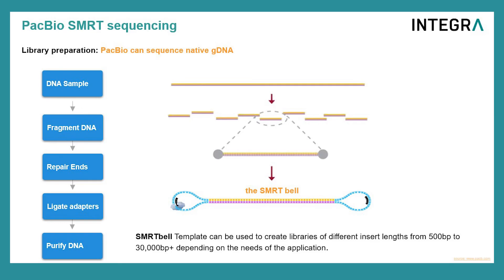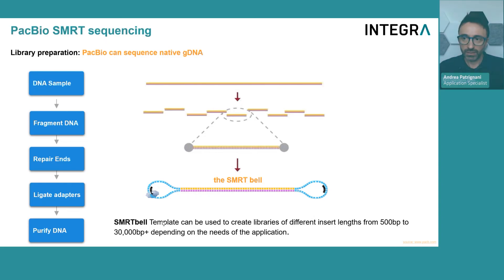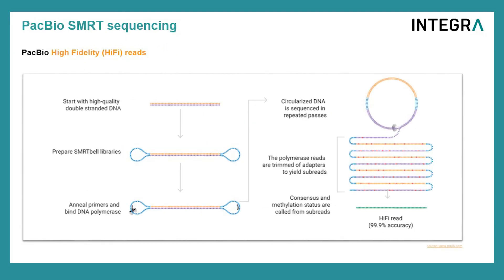With PacBio, native DNA can be sequenced without the need for PCR amplification. Genomic DNA is first fragmented to the desired size, then after an end repair step, adapters are ligated to the blunt ends of the fragments. The library size may vary from 500 to 30,000 base pairs, depending on the downstream application. During the sequencing step, circularized DNA is sequenced in repeated passes, generating a final consensus sequence called a HiFi read, which boasts an accuracy superior to 99.9%. This high accuracy is considered the main strength of PacBio sequencing, making it one of the most accurate sequencing technologies.